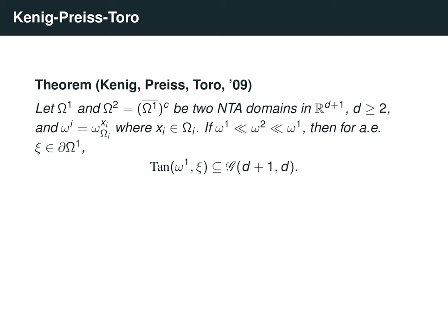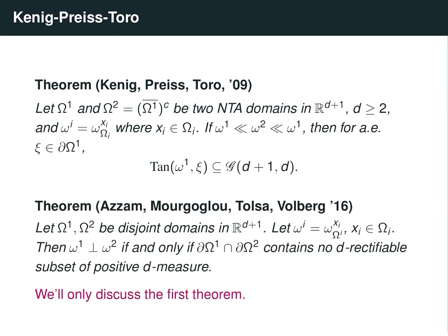This is a phenomenon much like Preiss's theorem, where we start with simple measure-theoretic assumptions — in this case, the mutual absolute continuity of the two harmonic measures — and from that we learn about the actual shape of the boundary as we zoom in. Later, the full conjecture of Bishop was resolved for general domains in Euclidean space: any two domains whose harmonic measures are singular cannot have a rectifiable subset on the common part of their boundary. Alternatively, if two harmonic measures for two disjoint domains are absolutely continuous on some subset of the boundary, then we can find a rectifiable subset of positive measure inside this set.